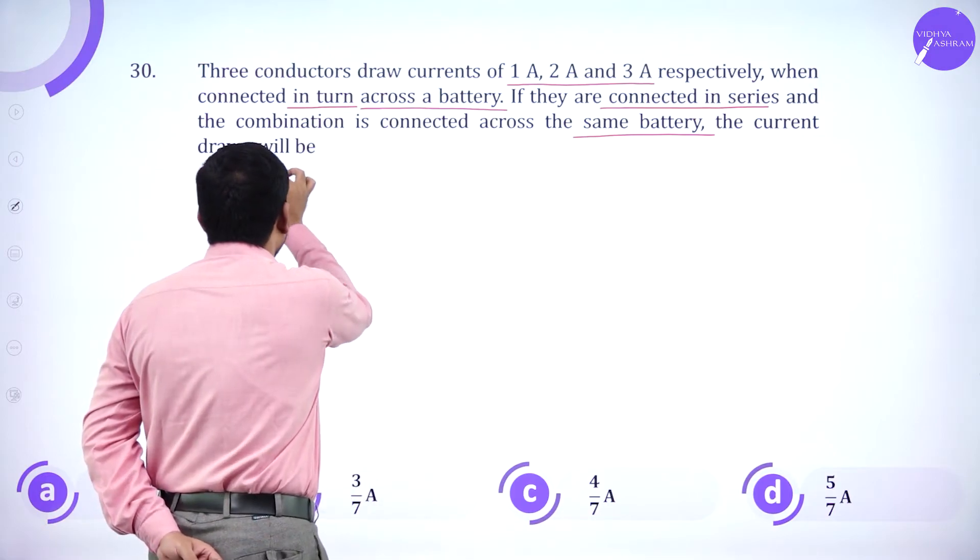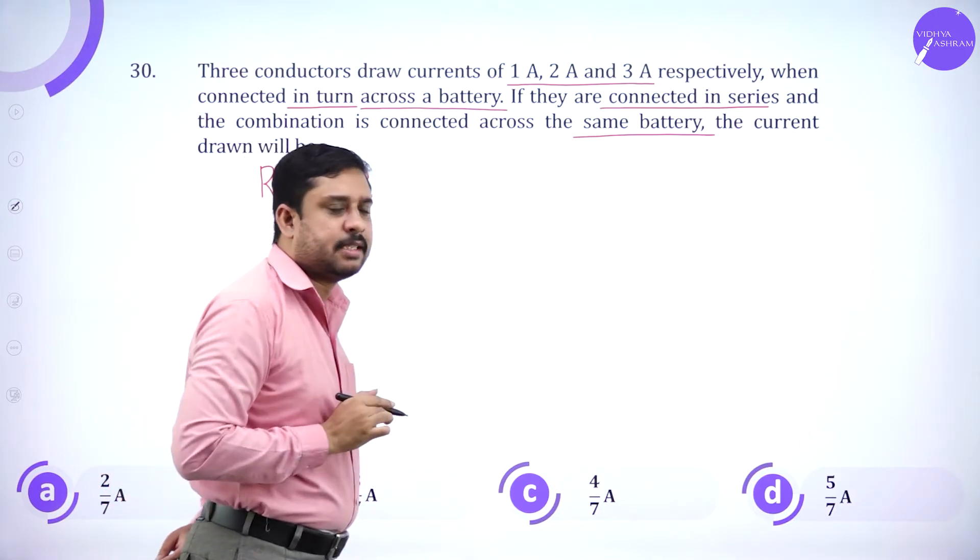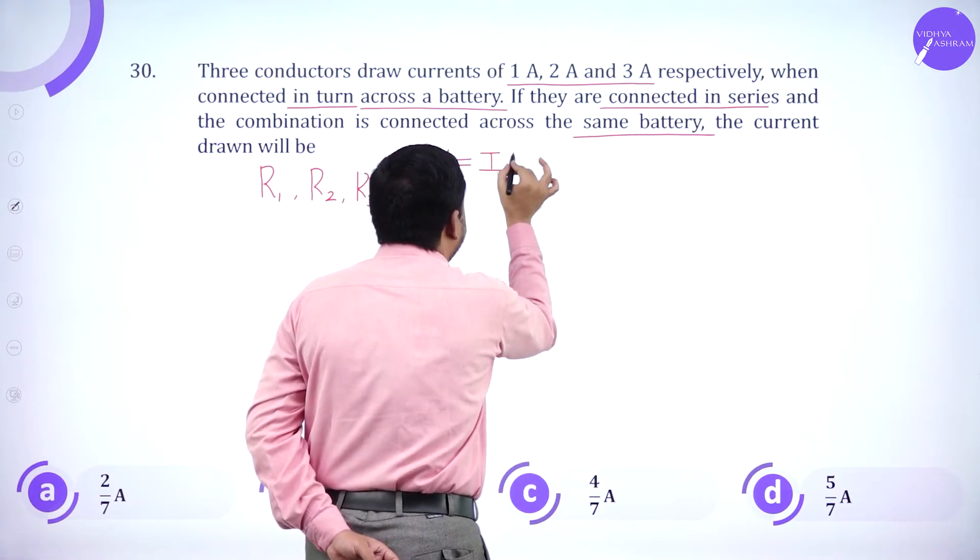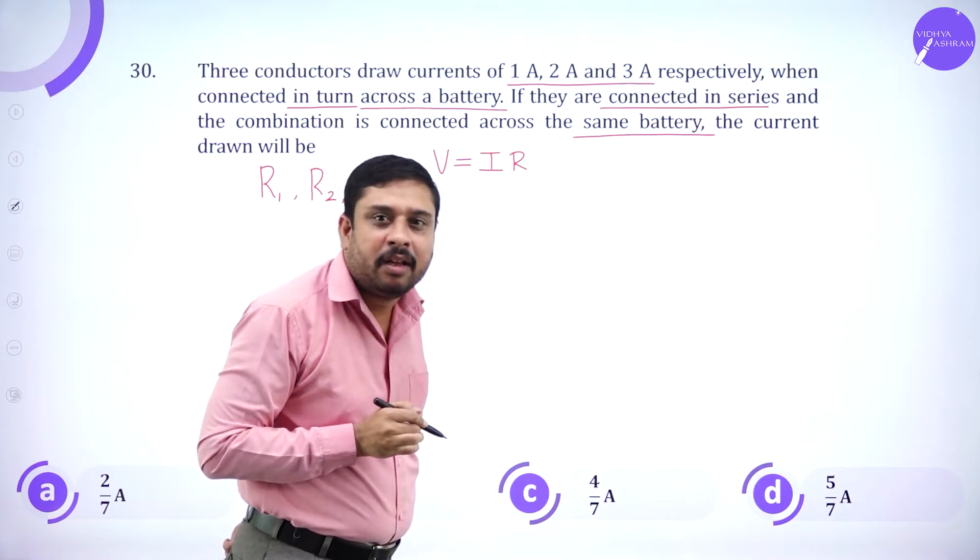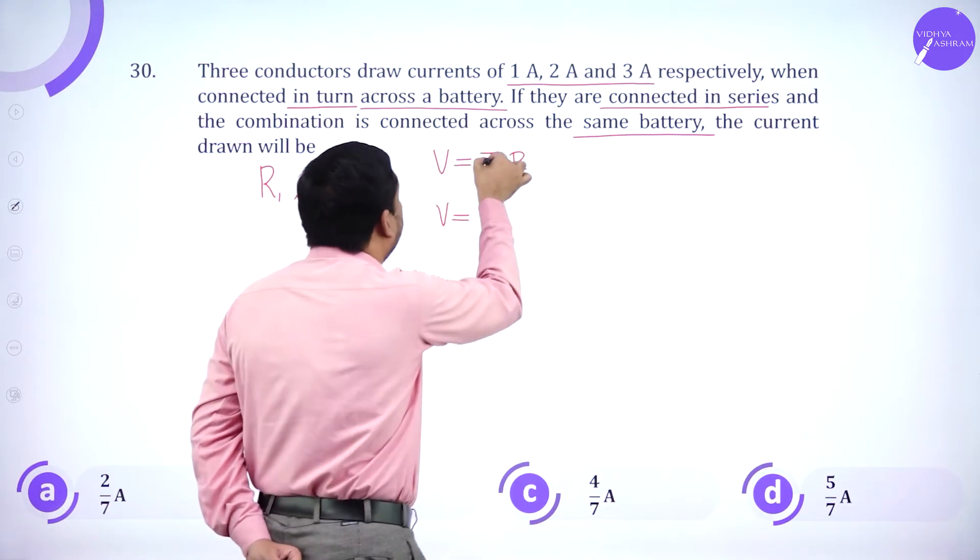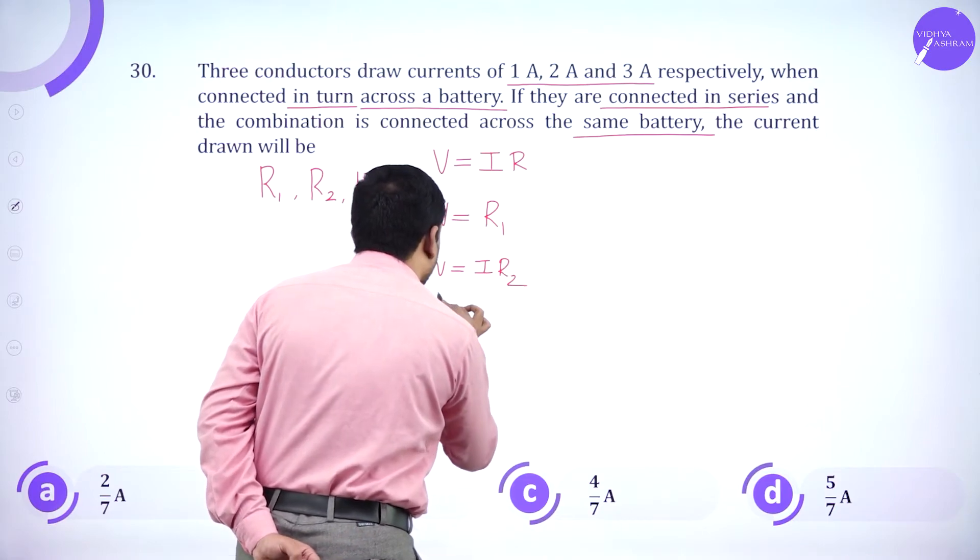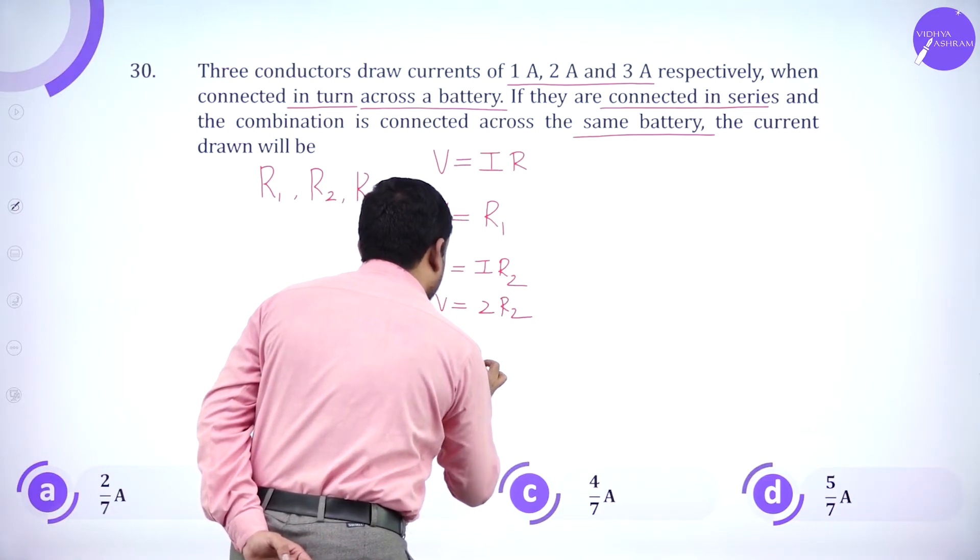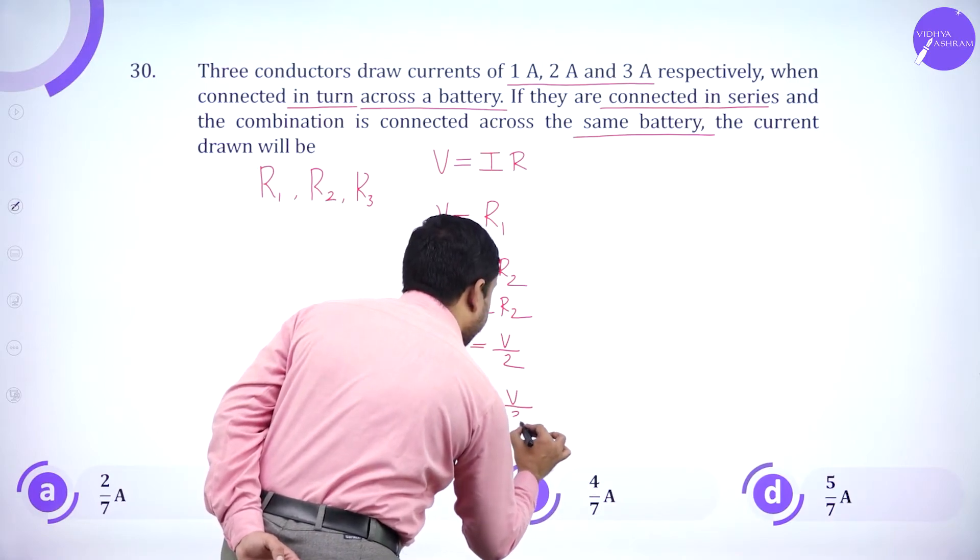First conductor draws 1 ampere current. Second conductor draws 2 ampere current. Third conductor draws 3 ampere current. Next, the 3 conductors in series will connect with the same battery. Now I say R1, R2 and R3 are the resistances across each conductor. So we have from Ohm's law, V is I into R. Since connecting across each becomes parallel, potential remains same.